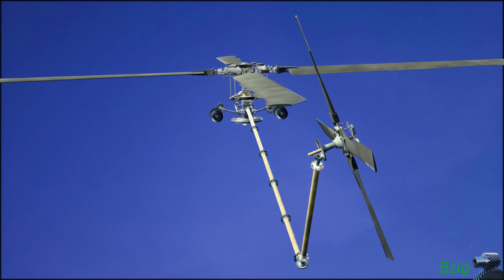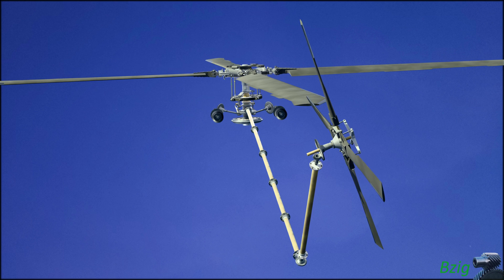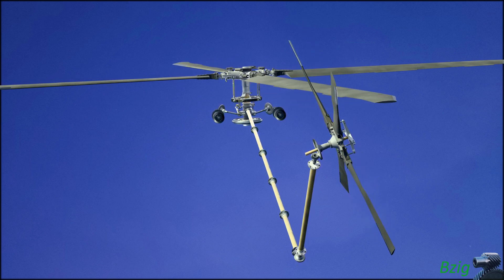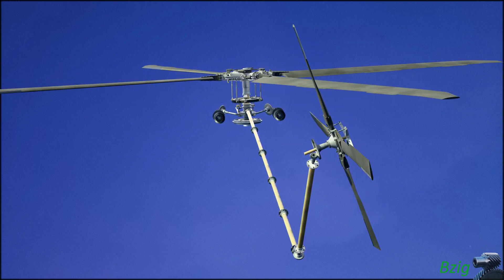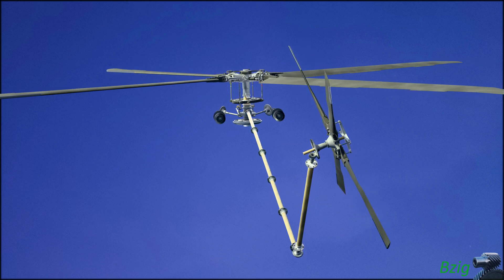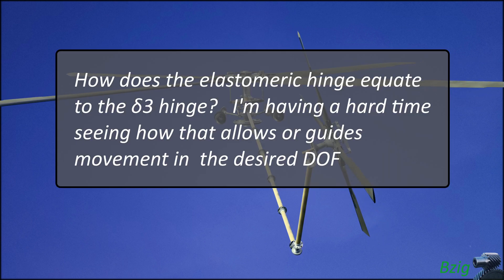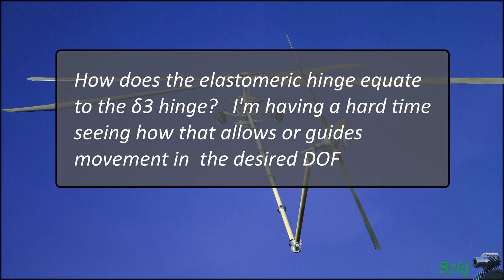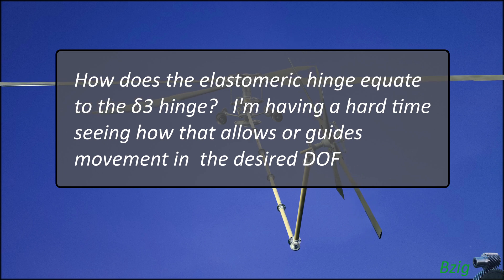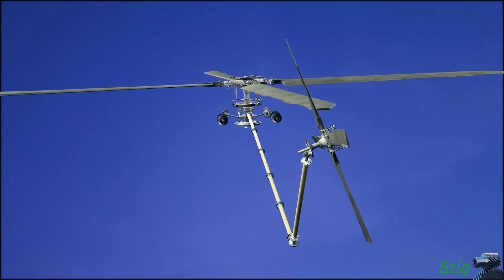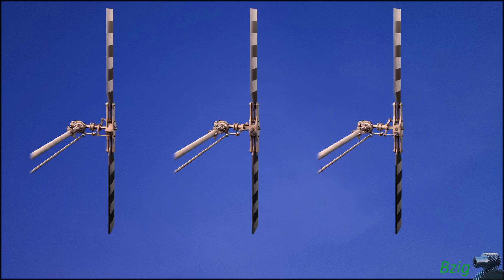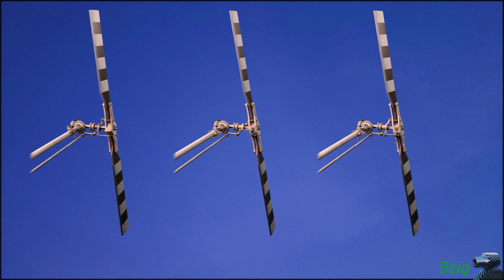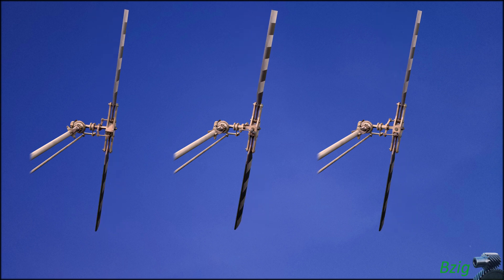The third reason I made this video is to answer a viewer question about the H60 tail rotor video I posted a few months ago. Specifically, Chris C asked: how does the elastomeric hinge equate to the delta-3 hinge? I'm having a hard time seeing how that allows or guides movement in the desired degree of freedom. And it's this question that motivated me to model not just one R44 tail rotor, but three separate tail rotors with different mechanical implementations of rotor flapping and pitch flap coupling.